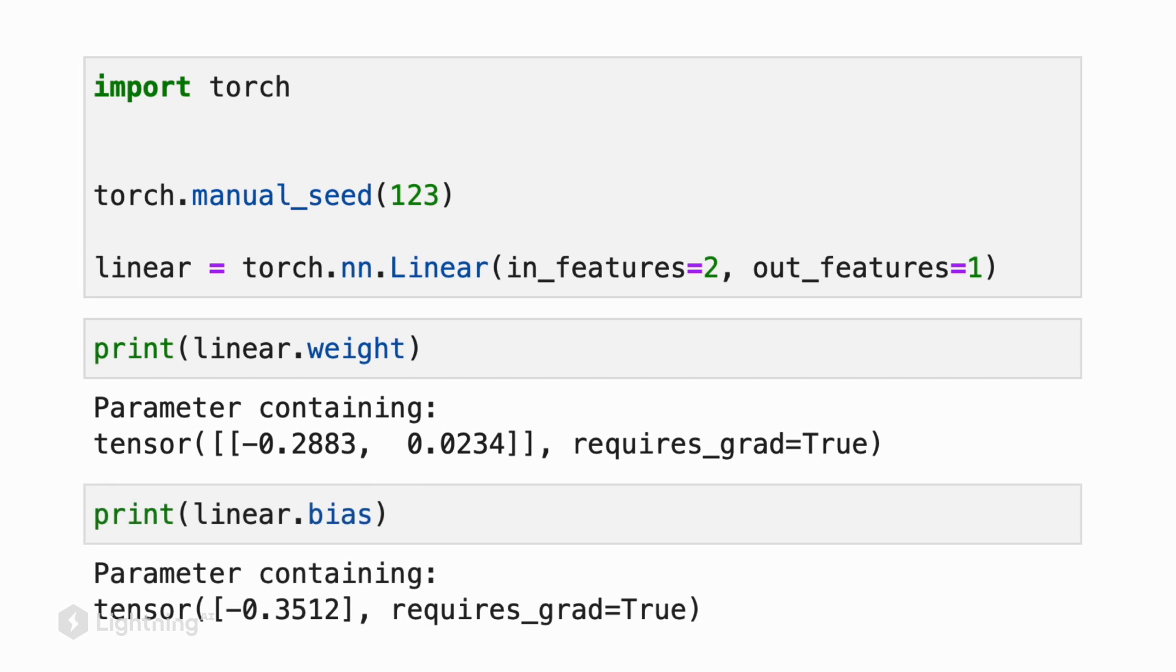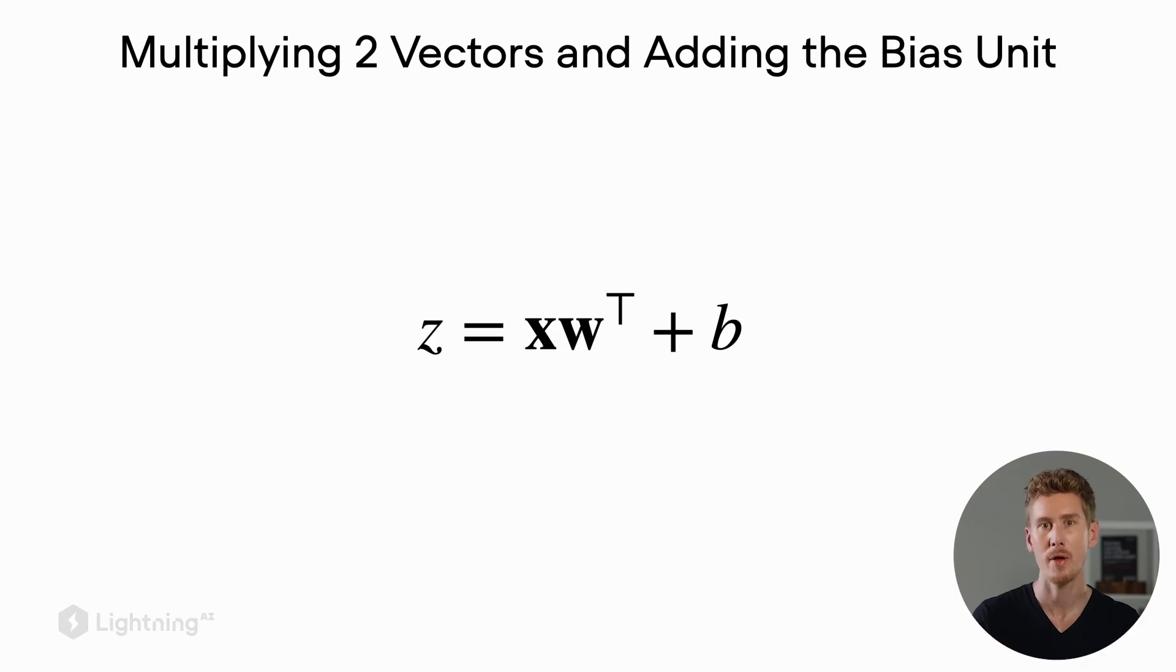So this is how we initialize the linear layer. How do we now compute the weighted sum? Recall from earlier videos how we compute the weighted sum - it's essentially the weighted sum between x and w plus the bias unit. If we have a single training example, x is a vector and we also have this weight vector consisting of the same number of weights as the input consists of features.